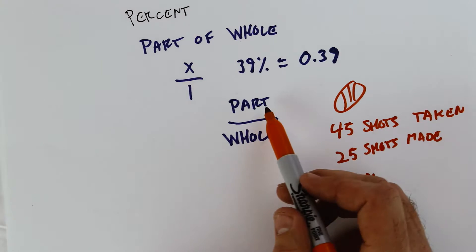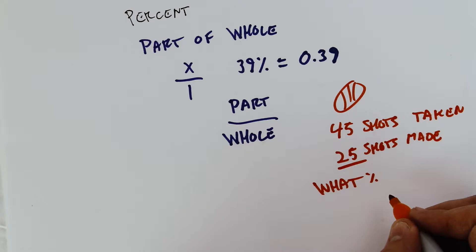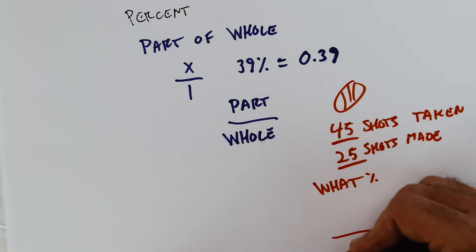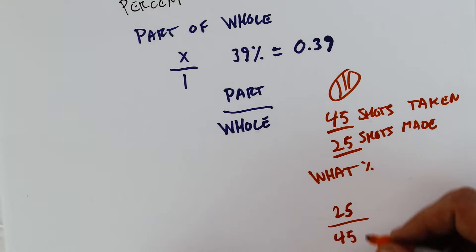So you're going to use this fraction, part over the whole. So 25 is the part, 45 is the whole. Because 45 is the total shots taken. So you have 45 on the bottom and 25 on top. And then you just divide.